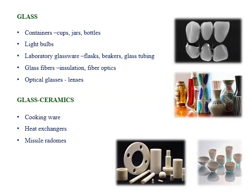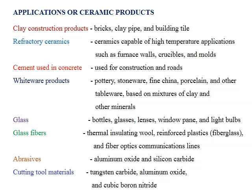Using traditional glass, we can produce containers, cups, jars, bottles, light bulbs, laboratory glassware such as flasks and beakers, glass tubing, glass fibers for insulation, fiber optics, and optical glasses for lens production. By using glass ceramics, which have higher strength compared to glass, they are useful for producing cooking wares, heat exchangers, and missile radomes. These are the general applications of ceramic products across different categories.